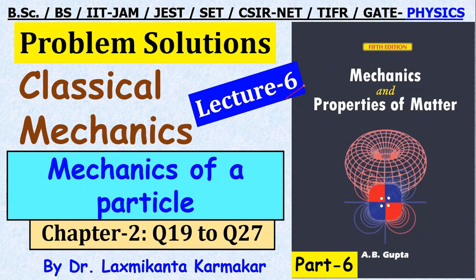Hello, welcome everyone. This is lecture number 6 for the solution of classical mechanics, part 6 for the book 'Mechanics and Properties of Matter' by A.B. Gupta. In this series we discuss questions from chapter 1 onwards. If you want to watch previous lectures, links are given in the description box, including different playlists for theoretical parts and problem solutions.